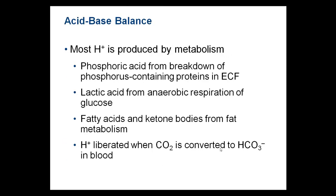Most hydrogen ions are produced by metabolism — from the citric acid cycle and glycolysis, we accumulate quite a bit of free hydrogen ions. In addition to those liberated from oxidative respiration and glycolysis, we also have phosphoric acid from breakdown of phosphorus-containing proteins, lactic acid from anaerobic respiration, and fatty acids and ketones if you break down fat to generate energy.